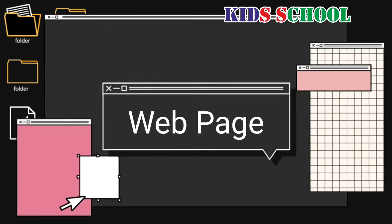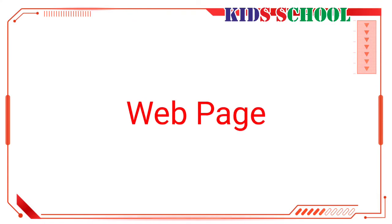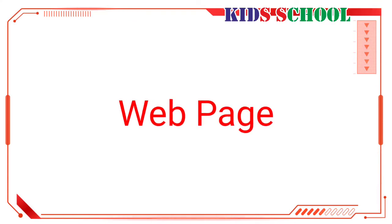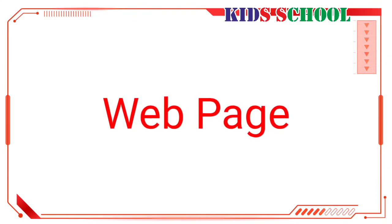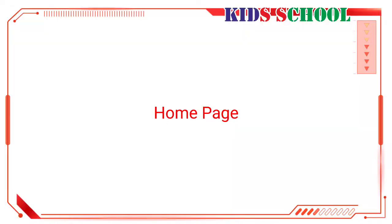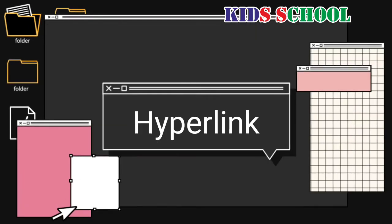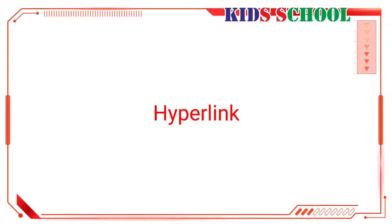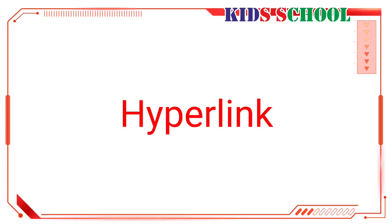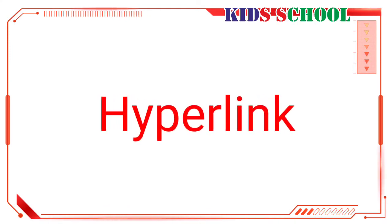A web page is a single page of information on a website. It could be text, images, sound, or video clips. A home page is the first page of a website. A hyperlink is a web address on a web page — it is a shortcut to another web page and could be an image or text.